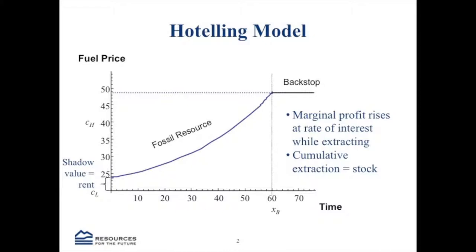You can have as much of it as you want. In this example, we have a backstop up here that costs a little under $50. But if we have a low-cost fossil energy resource that only costs $20 — say this is like a barrel of oil equivalent — we want to extract that and consume that first. It's cheaper.